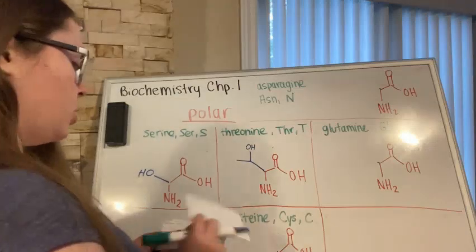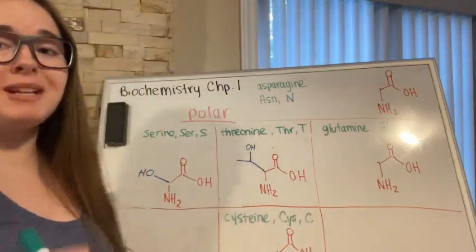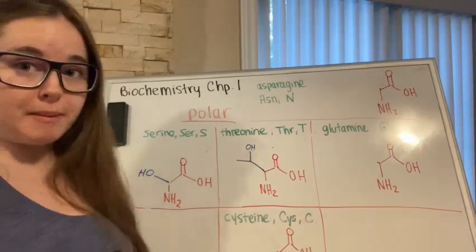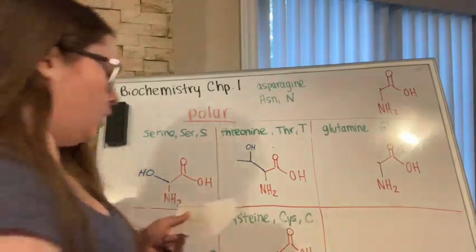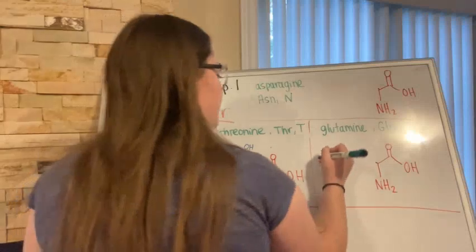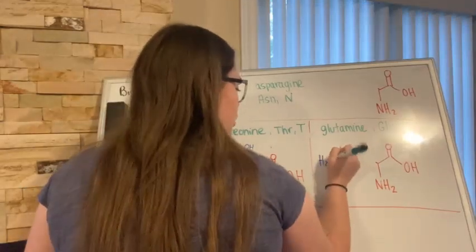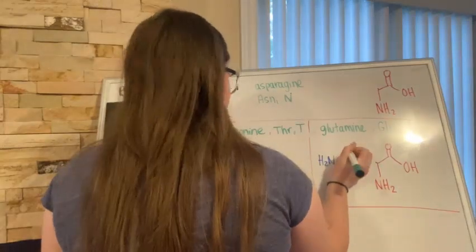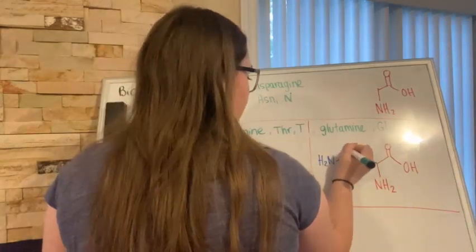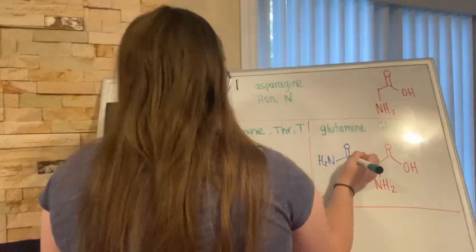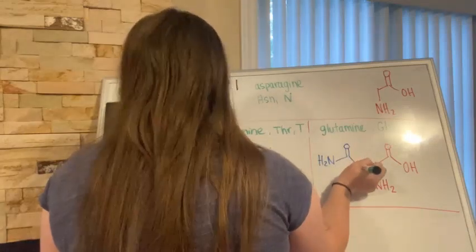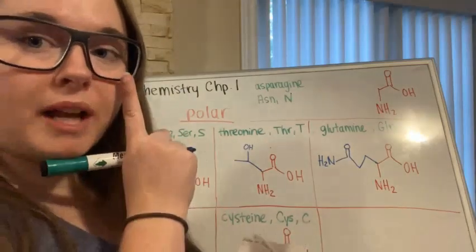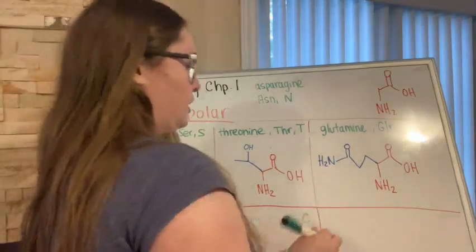The next one we have is glutamine. Glutamine's one-letter abbreviation is a little weird — it's Q, one of the odd ones you just need to remember. Glutamine's side chain has an H2N amino group and a carbonyl carbon.